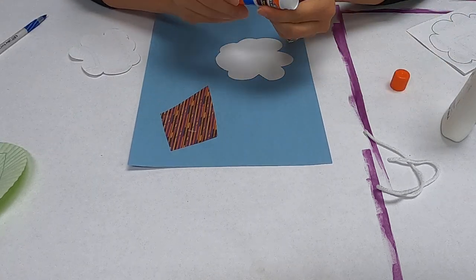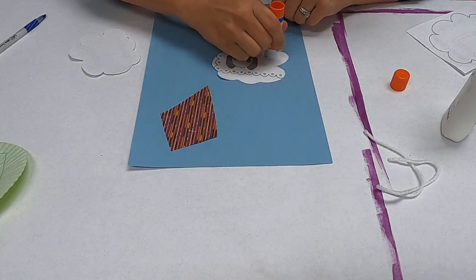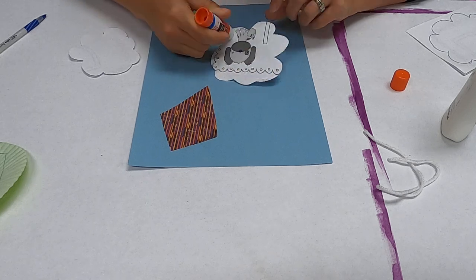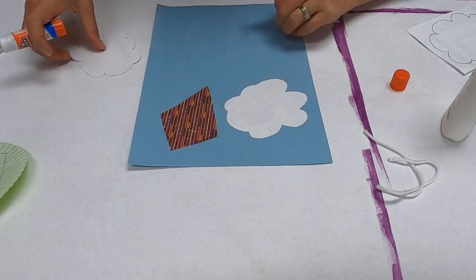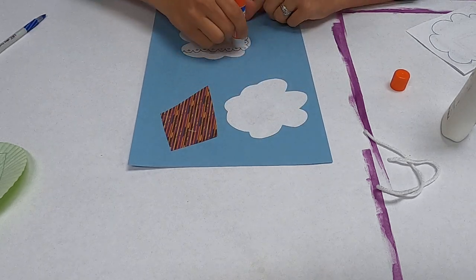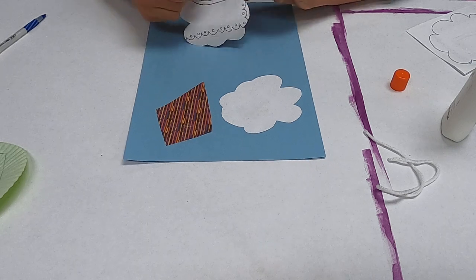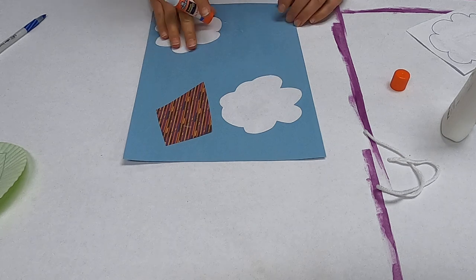So again, using your stick glue, turn it over and we're going to glue it onto the back. And I'm going to put one cloud up here and I'm going to put another cloud down at the bottom and put them right there, kind of to the side.